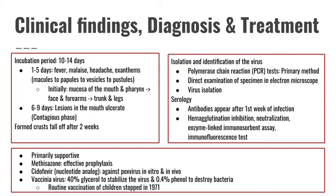Initially, rashes would start at the mouth and pharynx and then spread to the face, the trunk, and the legs. After about 6 days, there would be ulcerations in the mouth, which would mean the disease is contagious. After 2 weeks, the crust seen in the pustules would fall off. Diagnosis can be through PCR, viral isolation, or serology, in which we check for antibodies.